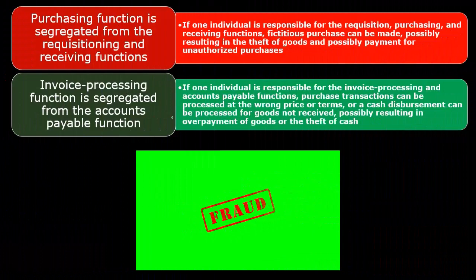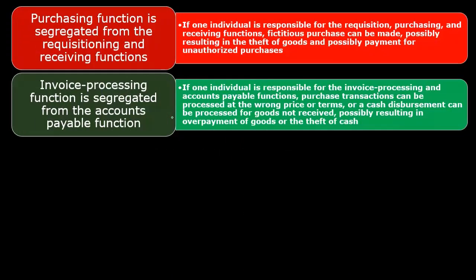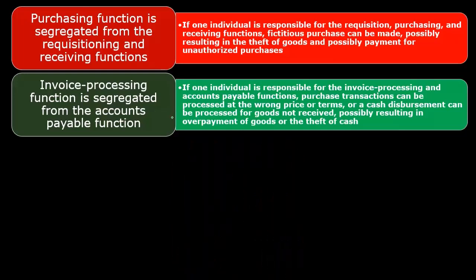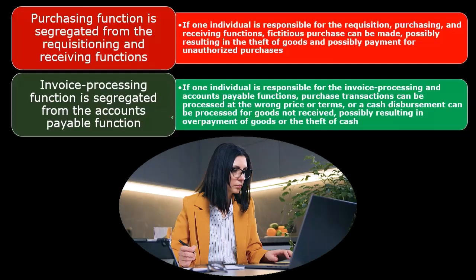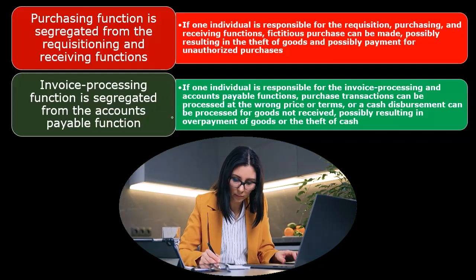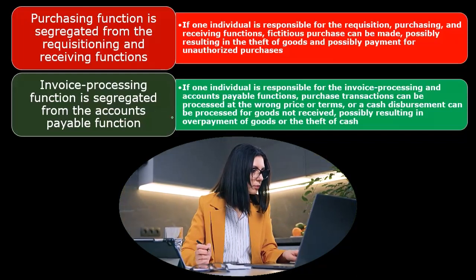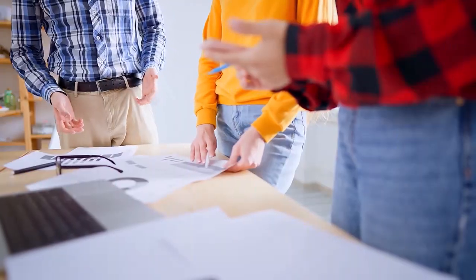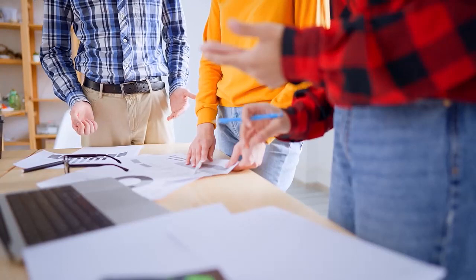Whenever we think about these internal controls, you might say, 'Well, that wouldn't happen — I know and trust all these people.' But just remember, as the company gets larger, we want to remove the ability for fraud to happen. We have to imagine the fraud taking place and put internal controls in the system. It's often easiest to think about what type of thing could result in fraud and set up a system where that will be less likely. We don't even want the temptation of fraud if we can put in a simple safeguard or separation of duty. It may also reduce error by creating a double-checking effect.